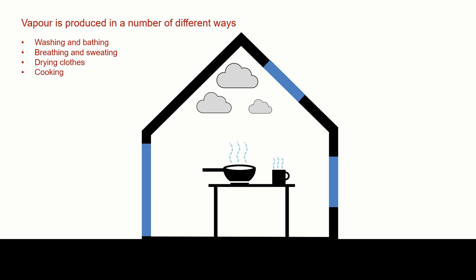And cooking. If we're cooking pasta, we put a liter of water into the pan and boil the pasta. By the time we get to the end, there's 700 milliliters of water left—300 milliliters will have dissipated into the internal atmosphere. There's quite a lot of moisture produced within buildings and we have to deal with that.